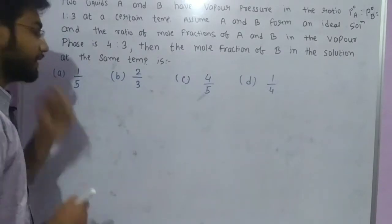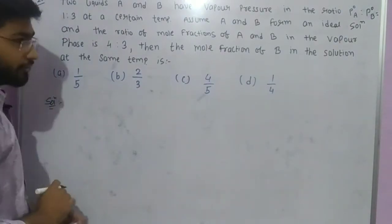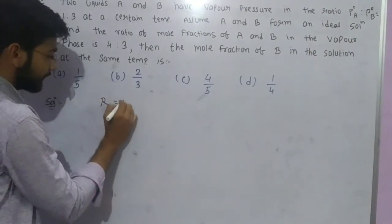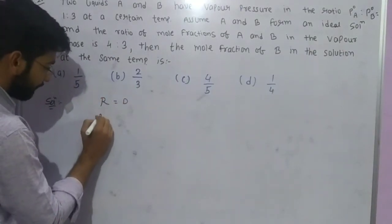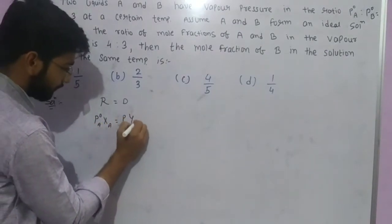Here is the vapor pressure. First of all, you have a question about Raoult's versus Dalton's relation. P not A times X A is equal to P total into Y A.